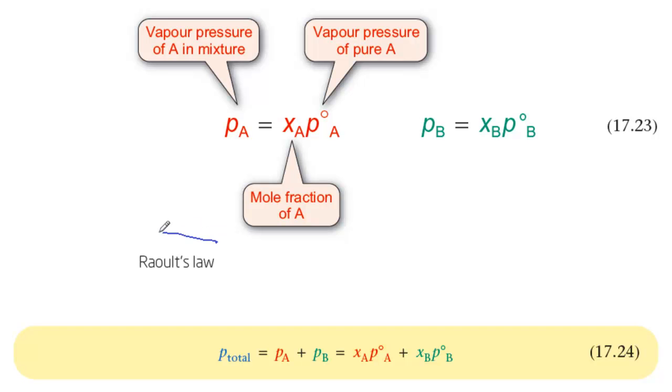Raoult's law enables you to calculate the vapor pressure of A in a mixture of two liquids A and B, in which the mole fraction of A is XA. This is expressed in equation 17.23.